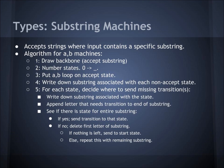Fourth, you write down the substring associated with each non-accept state. In step 5, for each state you decide where to send the missing transitions. First, you write down the substring associated with the state. Second, you append the letter that needs a transition to the end of the substring. Then you see if there is a state for the entire substring. If there is, you send the transition to that state. If there isn't, you delete the first letter of the substring and check again. If there is nothing left, you send it to the start state.